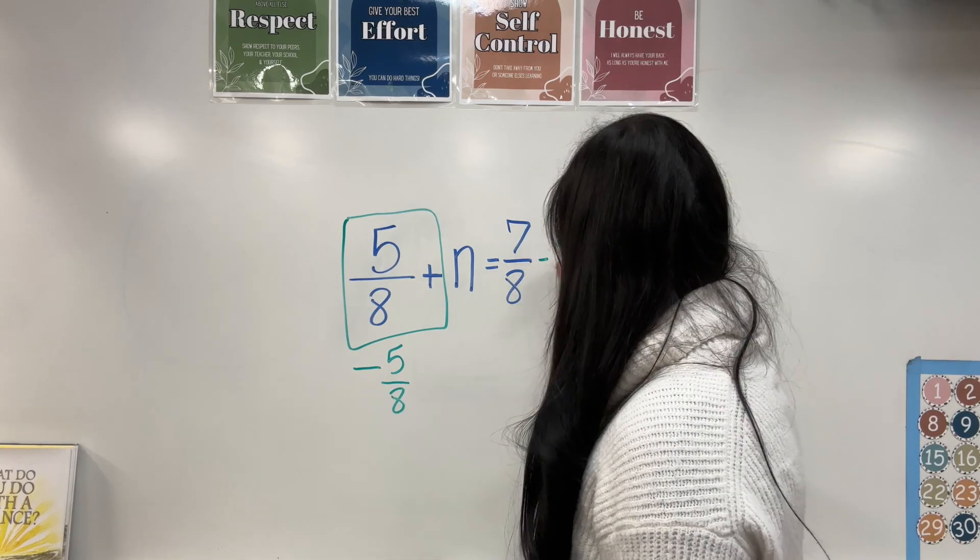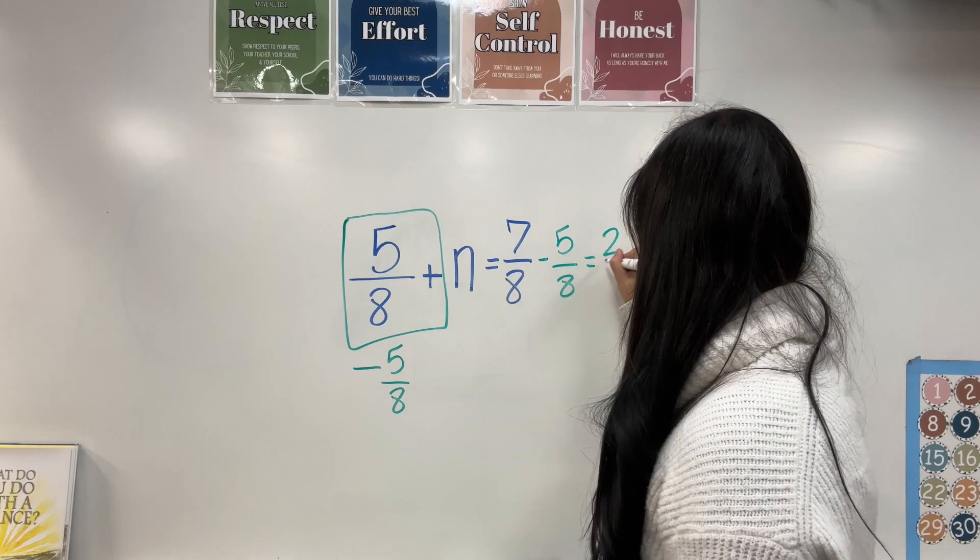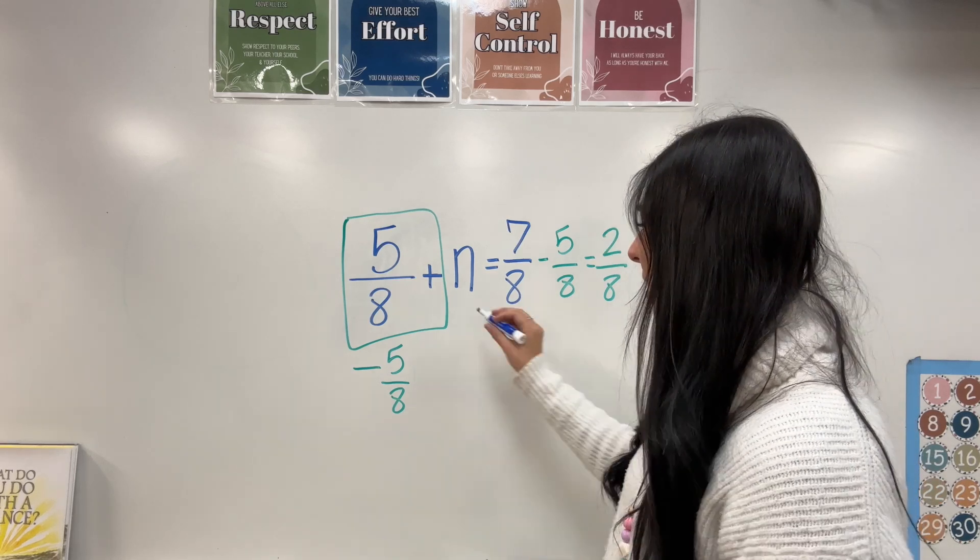So I'm going to take away five eighths on both sides. This leaves me with two eighths.